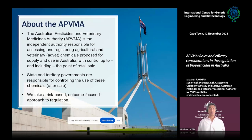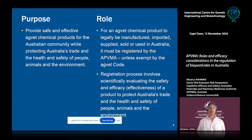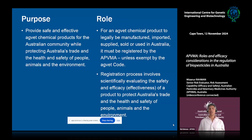The APVMA is the Australian government regulator. It's an independent authority responsible for assessing and registering agricultural and veterinary chemical products proposed for supply and use in Australia, up to and including the point of retail sale. We are not the only regulator in Australia — the state and territory governments are also responsible — but we are responsible up to the point of retail sale. Once it is sold, the control of use is the state and territory government's responsibility. We take a risk-based, outcome-focused approach for regulation. The role requires that for an agricultural and veterinary chemical product to legally be manufactured, imported, supplied, sold or used in Australia, it must be registered by APVMA unless it is exempted by the legislative criteria, which is the AgVet Code.